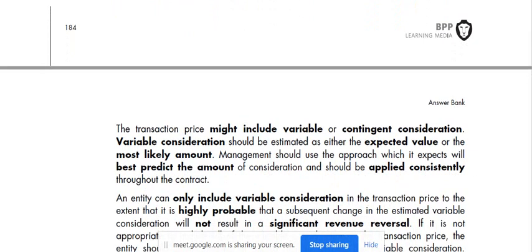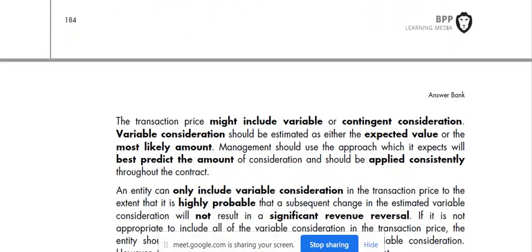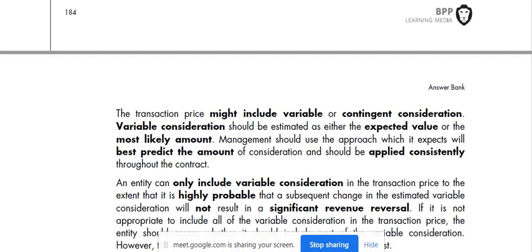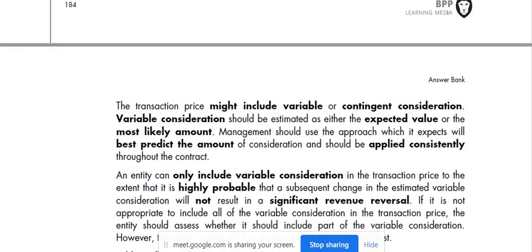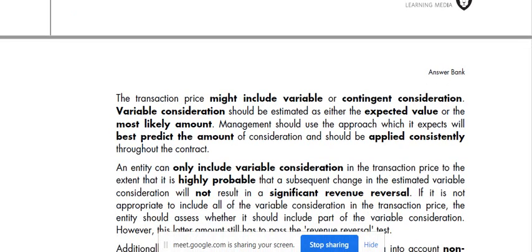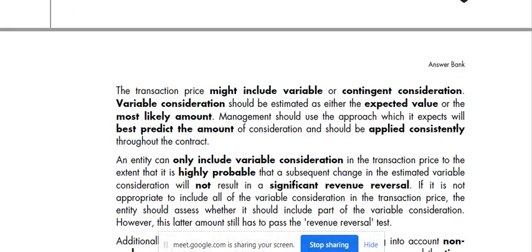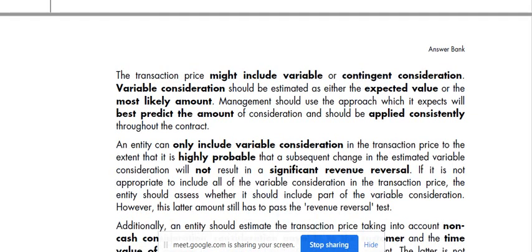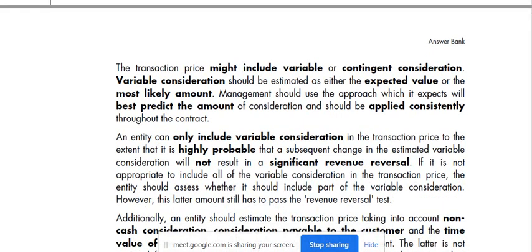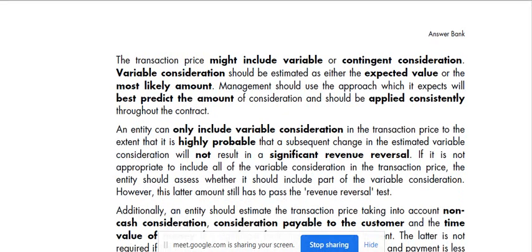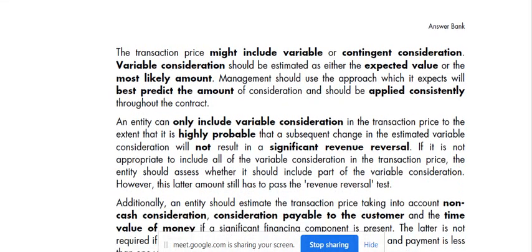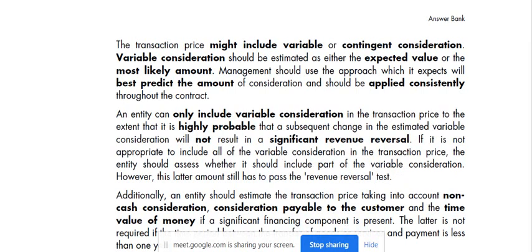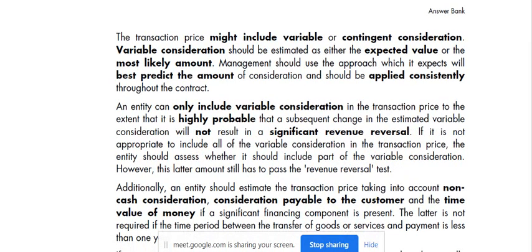The transaction price must include variable consideration. Variable consideration should be estimated as either the expected value or the most likely amount. Management should use the approach which it expects will best predict the amount of consideration and should be applied consistently throughout the contract. An entity can only include variable consideration in the transaction price to the extent that it is highly probable that a subsequent change in estimated variable consideration will not result in a significant revenue reversal. It is not appropriate to include all the variable consideration in the transaction price; the entity should assess whether it should include part of the variable consideration.